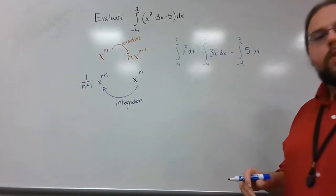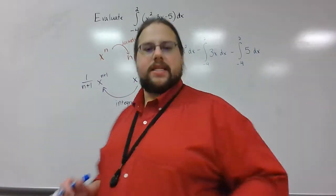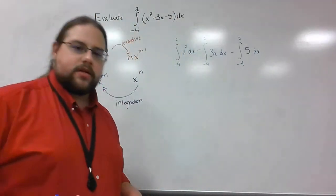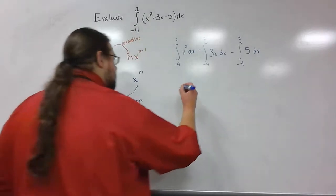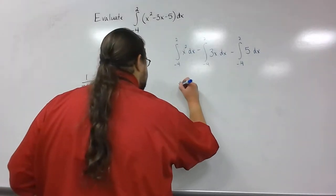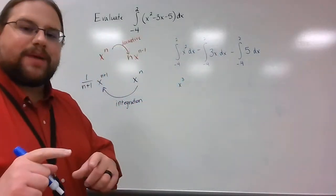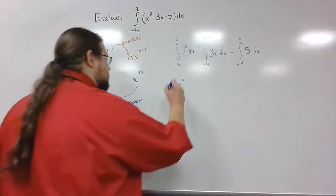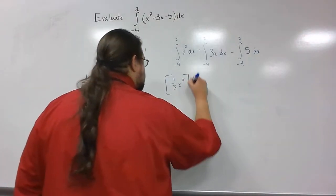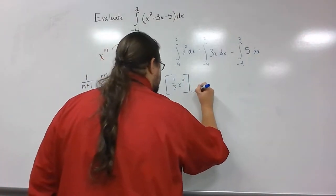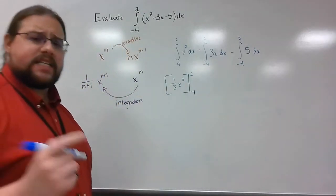Once I've broken it up by terms, I'll start applying the antiderivative process. The x squared term has exponent 2 — I kick it up by 1, so it becomes x cubed. Then I divide by the new exponent, which is 3. So the antiderivative of x squared is x cubed over 3, evaluated from negative 4 to 2. That's the first term.